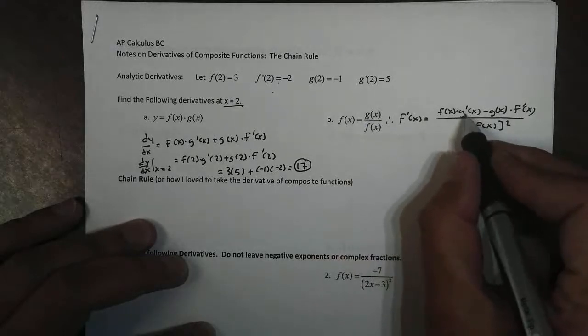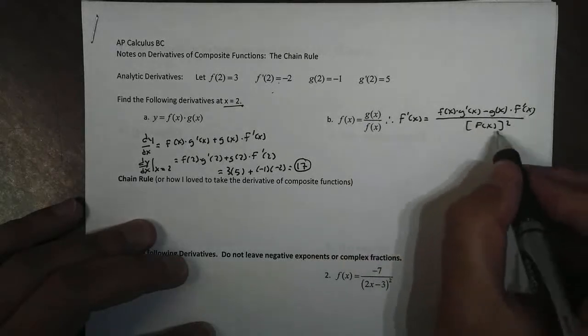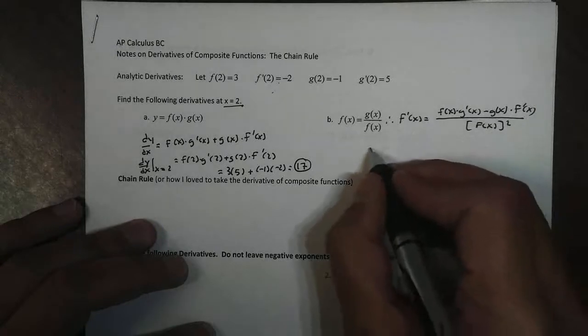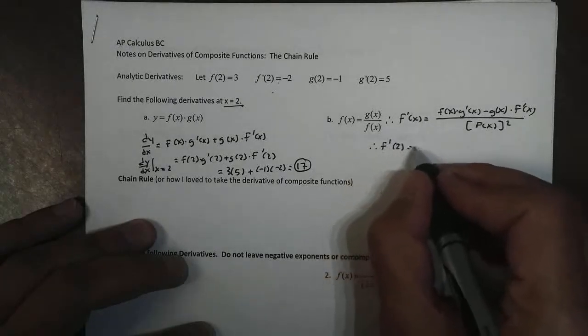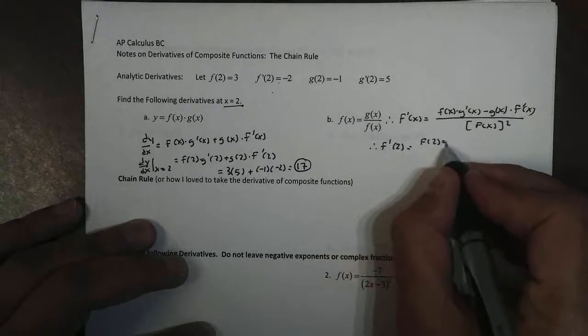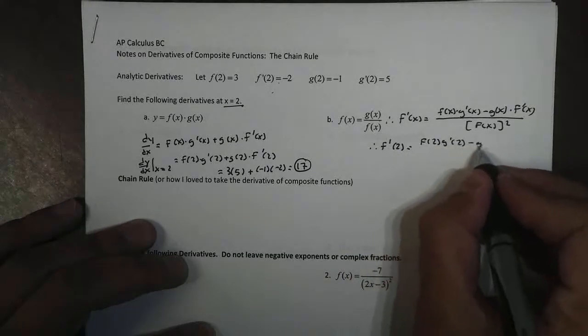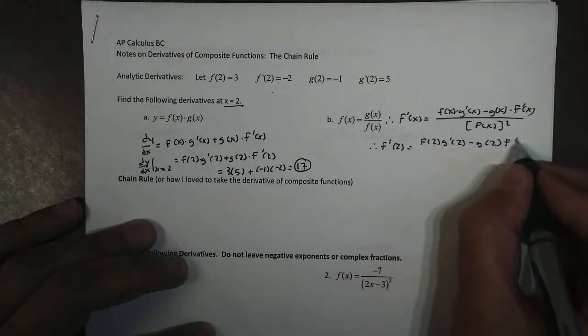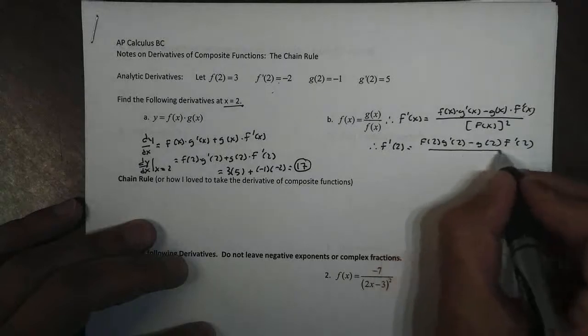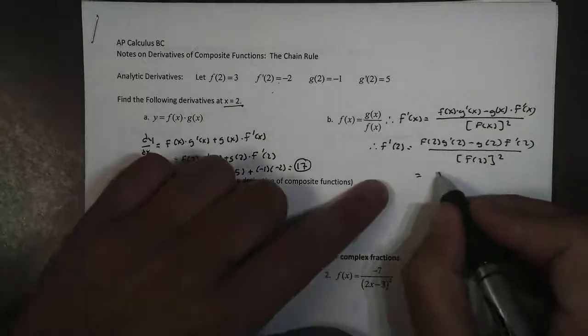Low d high, the bottom times the derivative of the top minus the top times the derivative of the bottom over the bottom squared. So now if I want to find the derivative at 2, it's going to be f(2) times g'(2) minus g(2) times f'(2) all over f(2) squared.